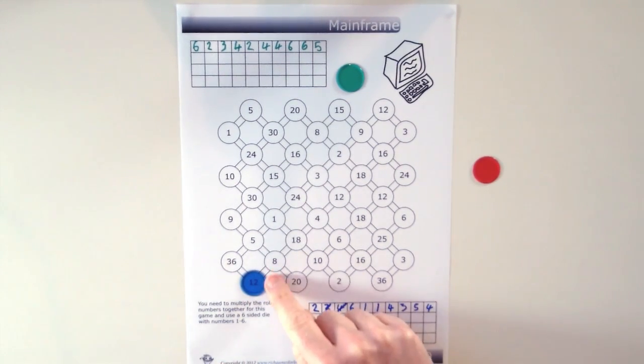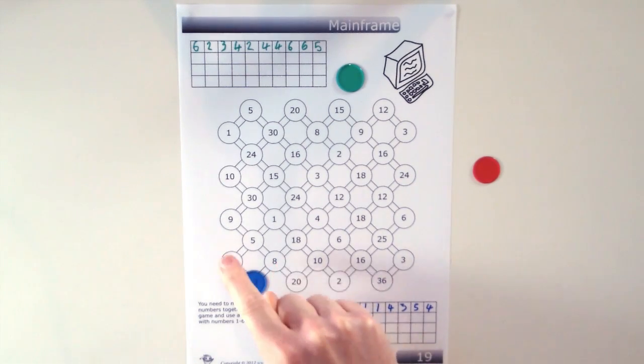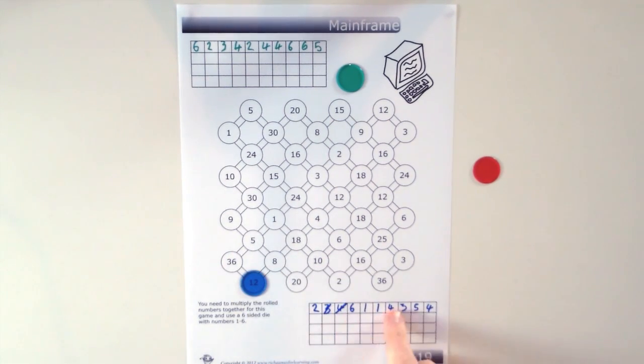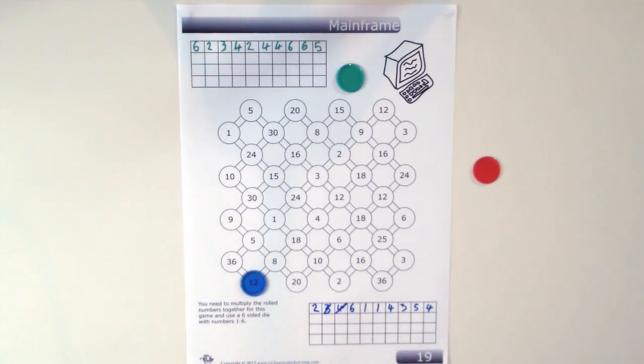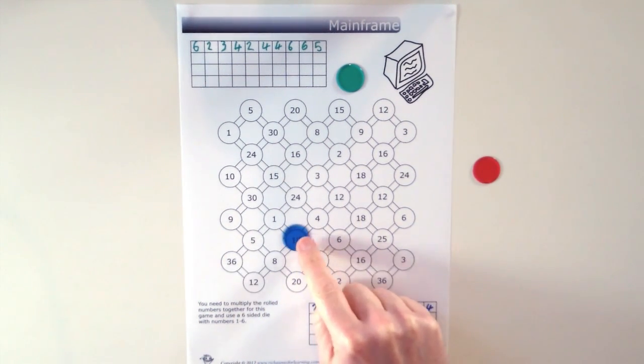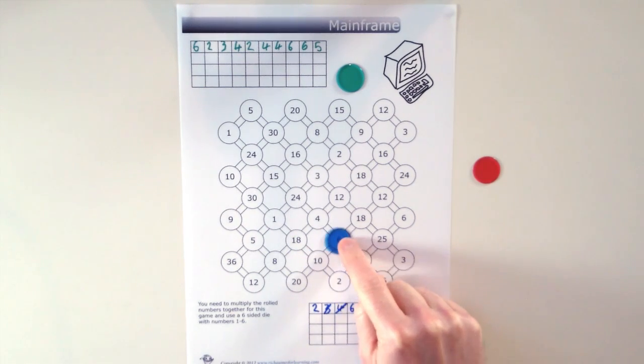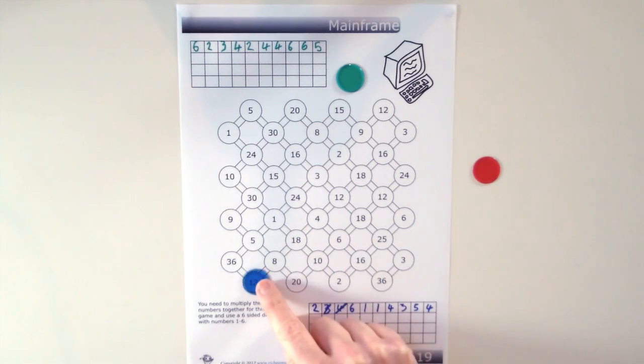Each move a player can only go one space if they can use their numbers to multiply together to equal the number on that space. If players are up here they can also move backwards one space as well if they need to move over to the side.